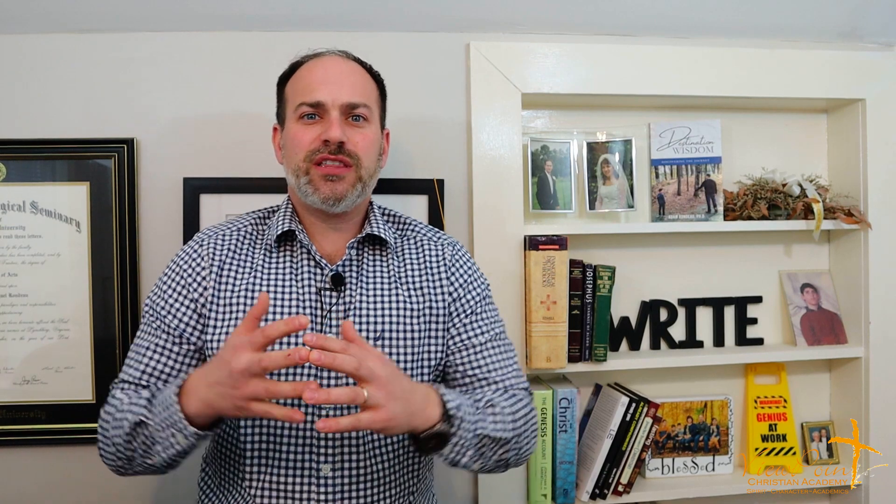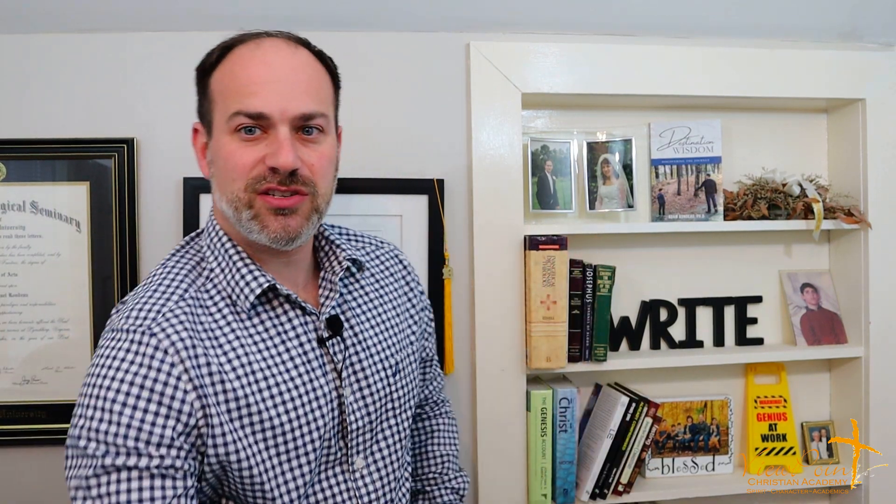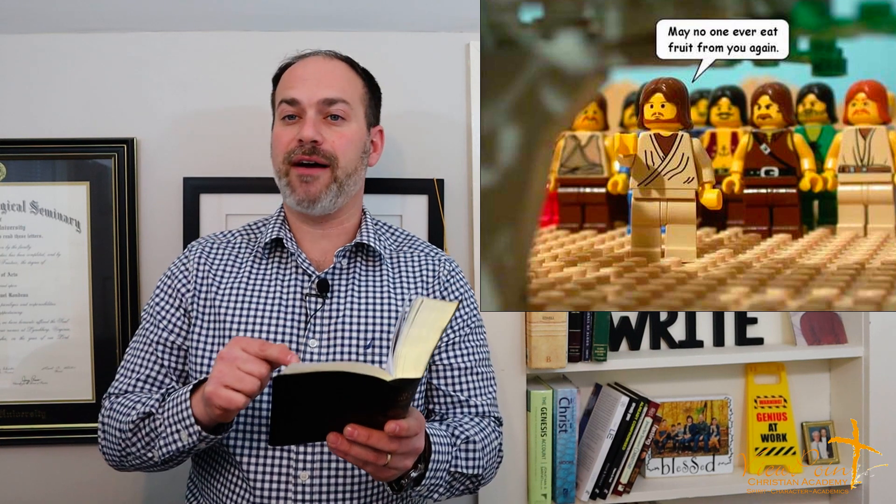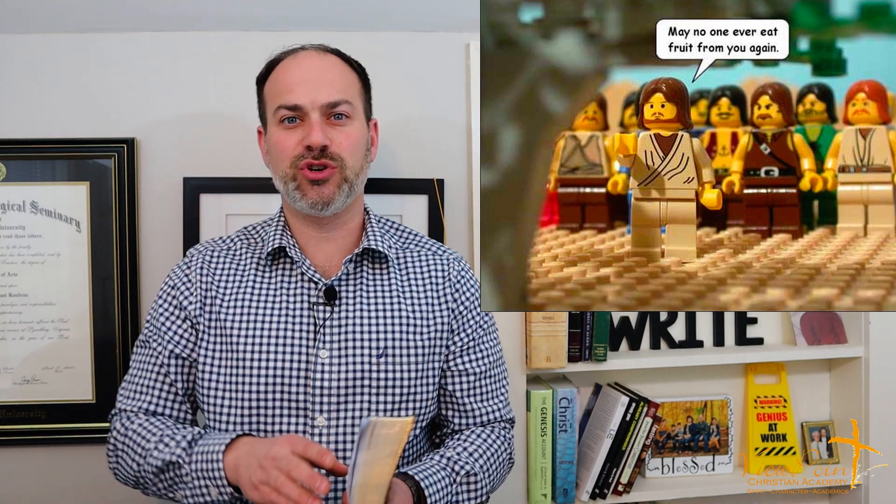On their way into the city, walking into Jerusalem from Bethany, the Bible tells us that Jesus saw a fig tree afar off. It had leaves and it was green, and He went to that fig tree expecting to be able to pick a fig and eat it. When He got to the fig tree, there were no figs. The Bible says in Mark chapter 11, verses 13 and 14: 'And seeing a fig tree afar off, having leaves, He came, if happily He might find anything thereon. And when He came to it, He found nothing but leaves, for the time of figs was not. And Jesus answered and said unto it, No man eat fruit of thee hereafter forever.' And His disciples heard what He said.